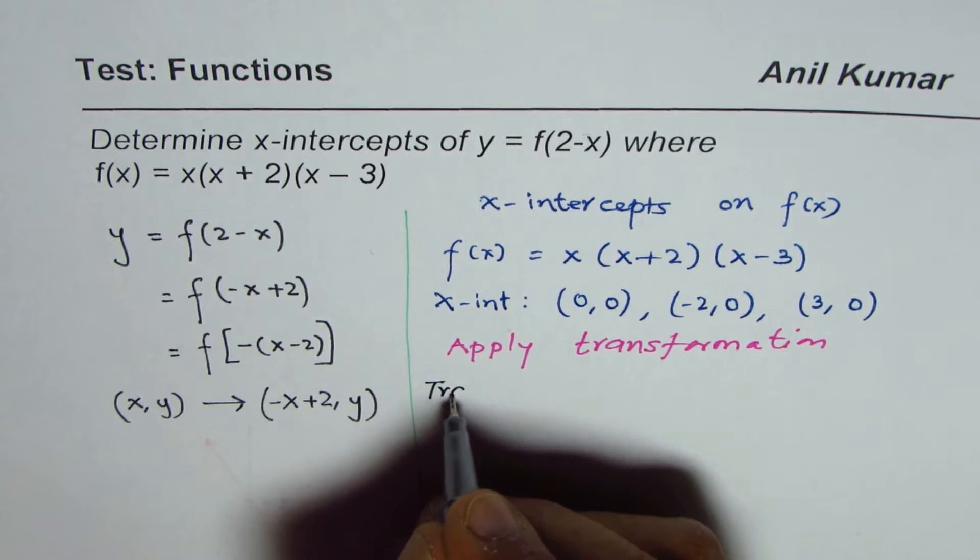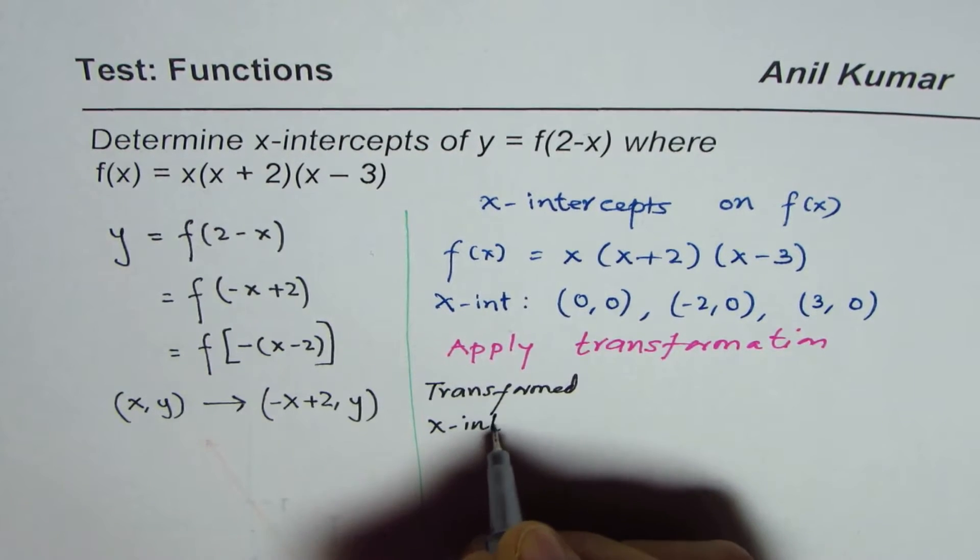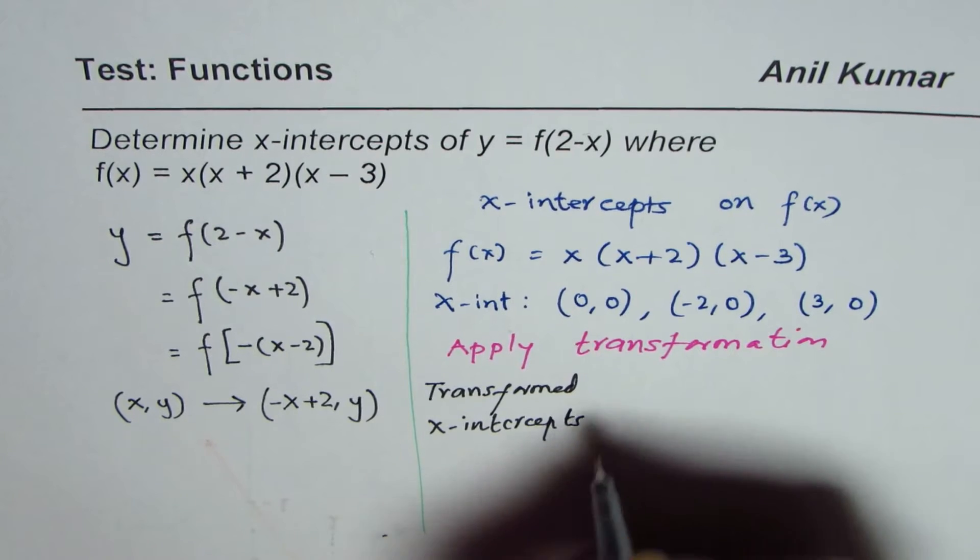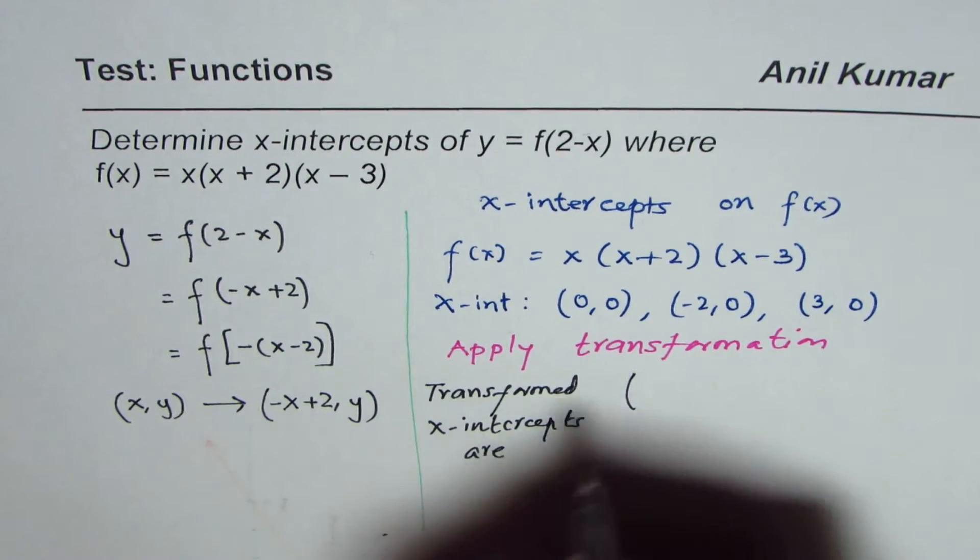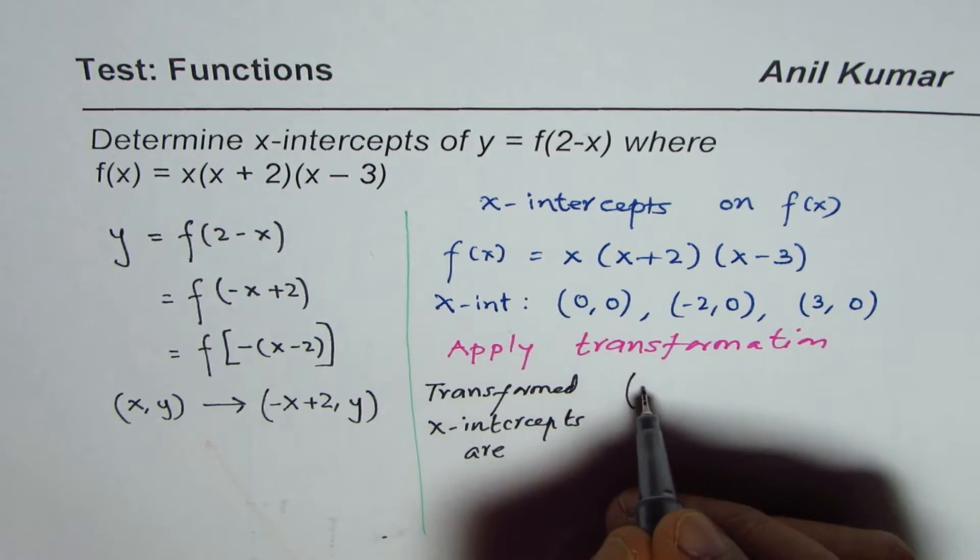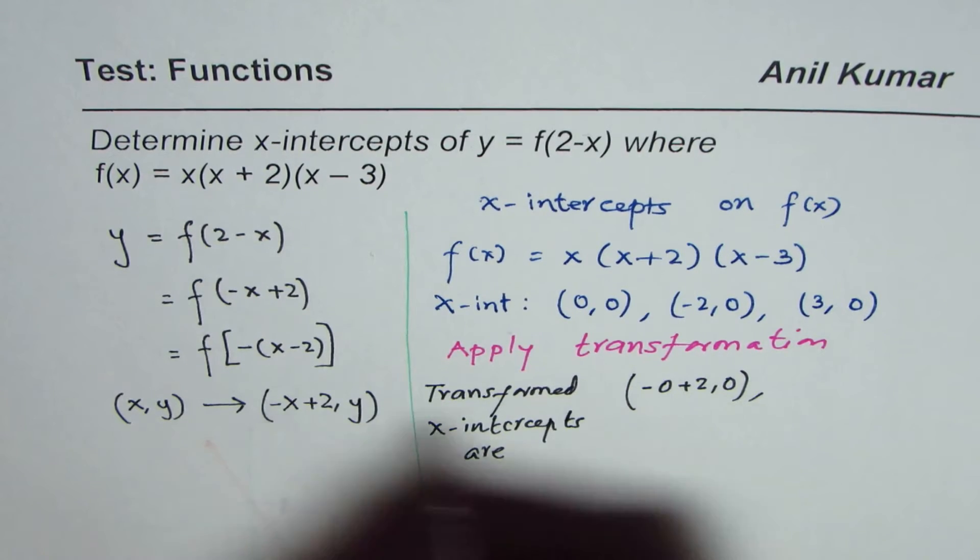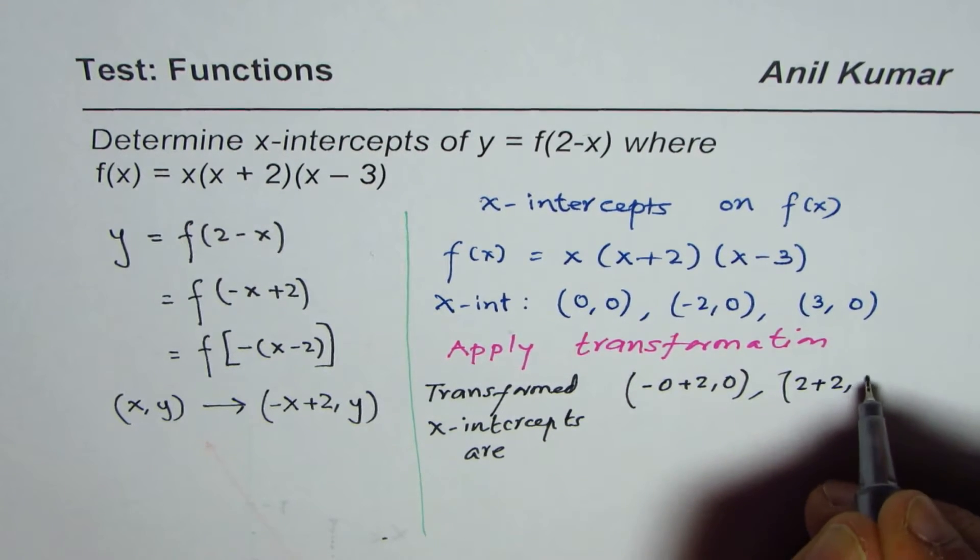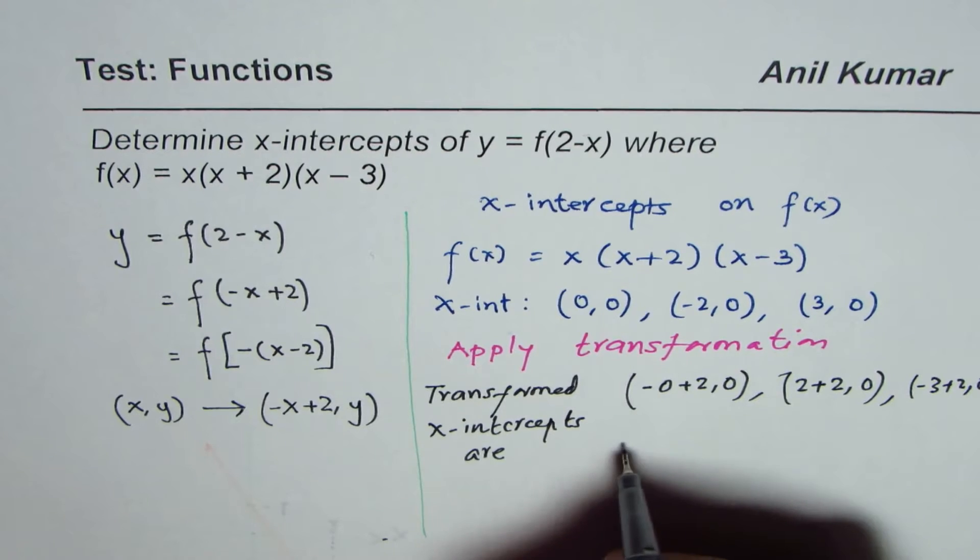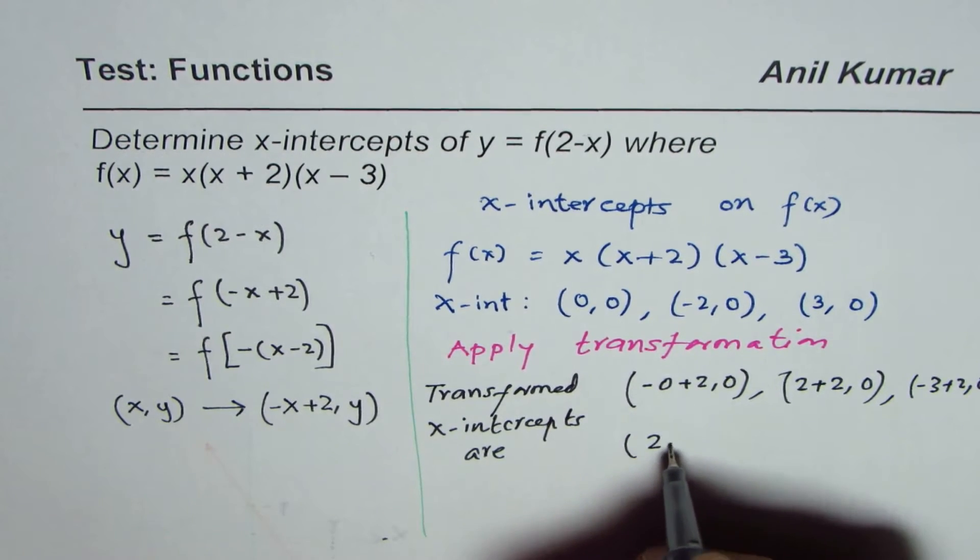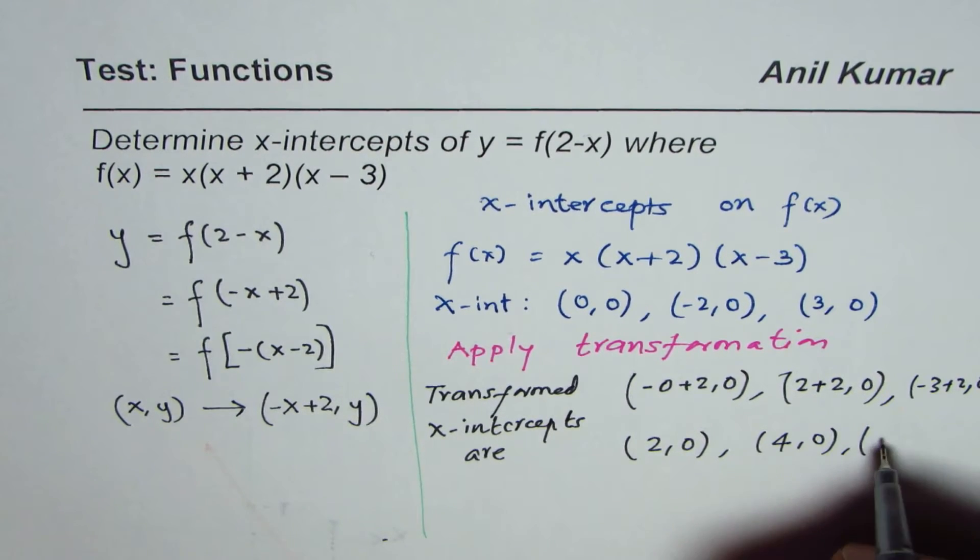So now transformed x-intercepts are: 0, 0 gets transformed to minus 0 plus 2, 0. That is minus 0 plus 2, y remains the same. The other one will be minus of minus 2 is plus, so it will be 2 plus 2, 0. And for the third one, it becomes minus 3 plus 2, 0. And that is to say, they will be 2, 0, 2 plus 2 is 4, 0, and minus 3, 2 is minus 1, 0.